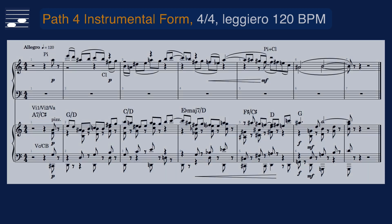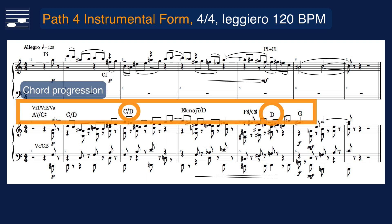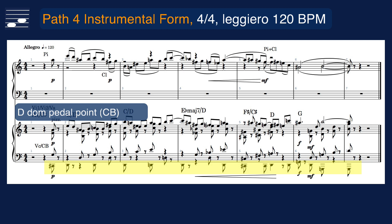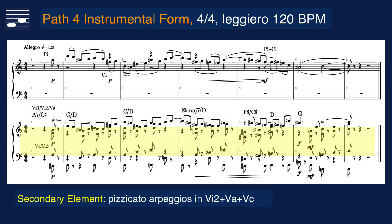The instrumental form is a leggero, 120 beats per minute setting for two woodwind players and pizzicato strings in 4-4. The harmony contains one chord per measure, the pedal point is in the bass. The melody is played in octave doubling between piccolo and first violins, later with added clarinet. As secondary element we have the plucked arpeggio chords in the middle string section parts.